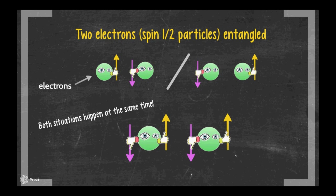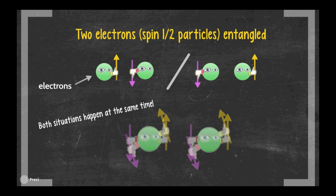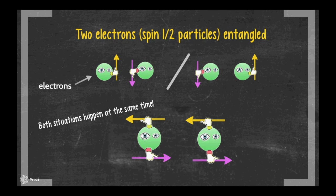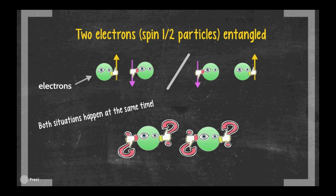To be correct, we wouldn't know in which direction the spin is pointing until we measure, so it could be any direction, being the spin sum always zero. We will represent this with interrogation signs. So now we have our two electrons entangled.